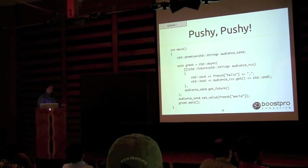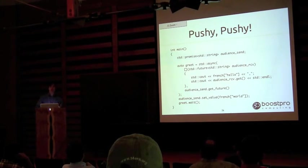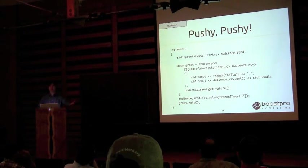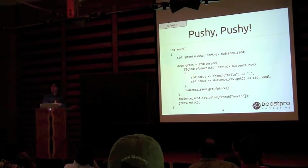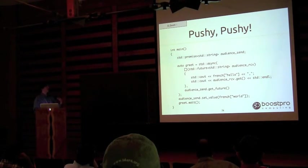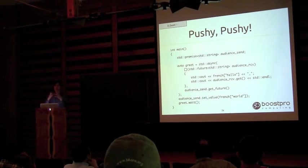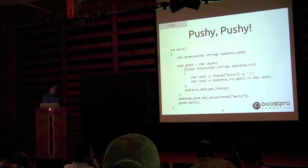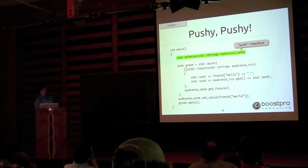You can create futures yourself. You can create an object which you hand to somebody that they see as a future — their side is getting. You need something to put a value into, and that's called promise. Promises are the other half of the future equation. When I create a promise, I'm basically creating a one-item-deep queue for talking to other threads. I put an item in there, and somebody who gets the future from that promise can get that value.